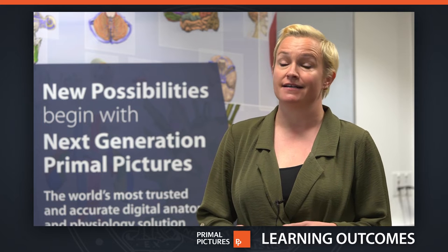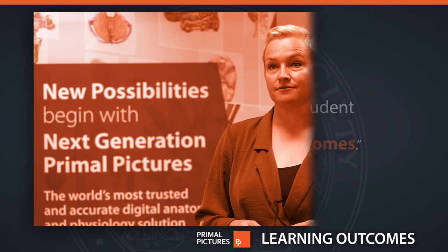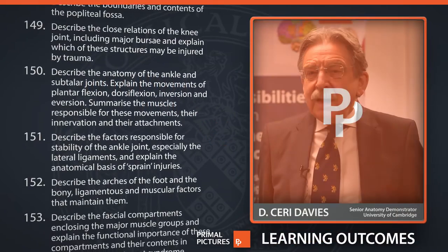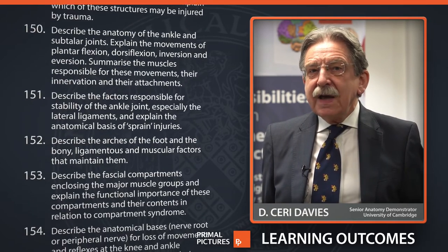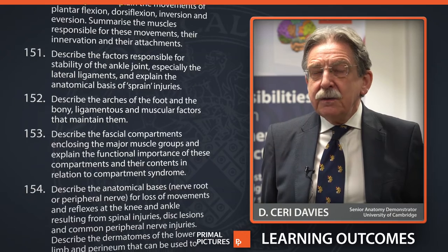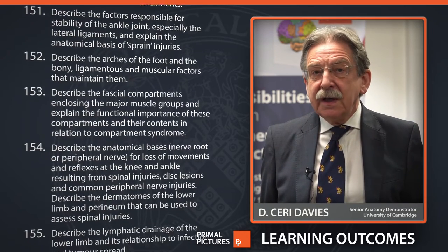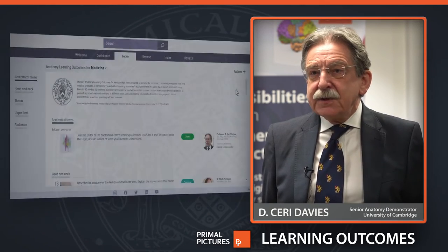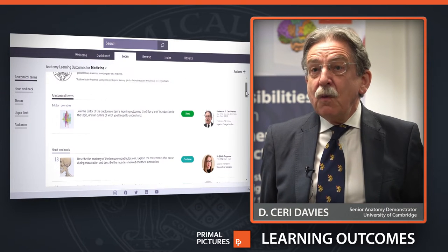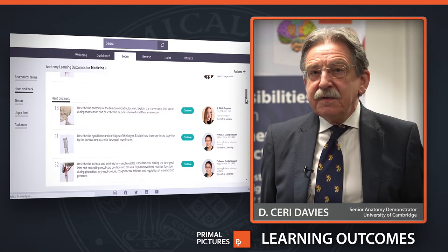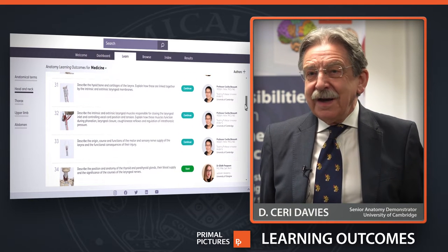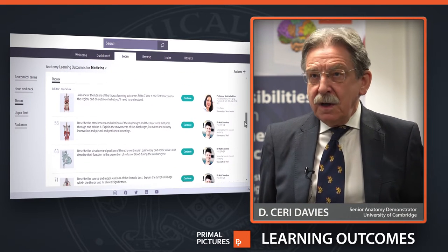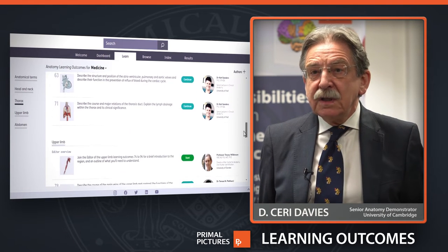One of the major problems students have is knowing the level of detail they need to learn about anatomy. When there is only a certain amount of time in the curriculum for students to study anatomy, it's important for them to know what to focus on. The 156 learning outcomes are an attempt to give students a really clear idea of what they need to know on graduation and during their first house years.